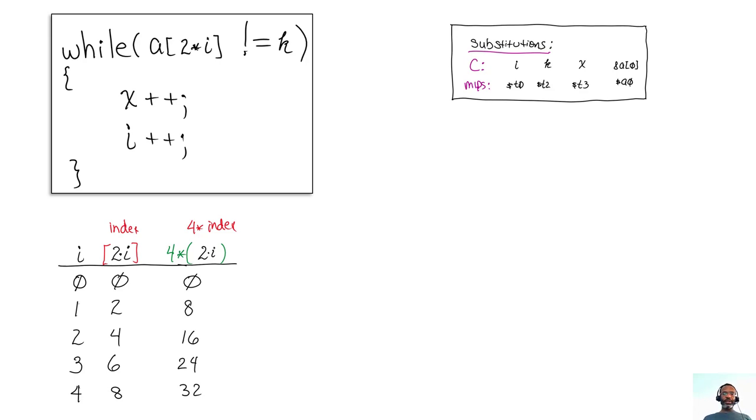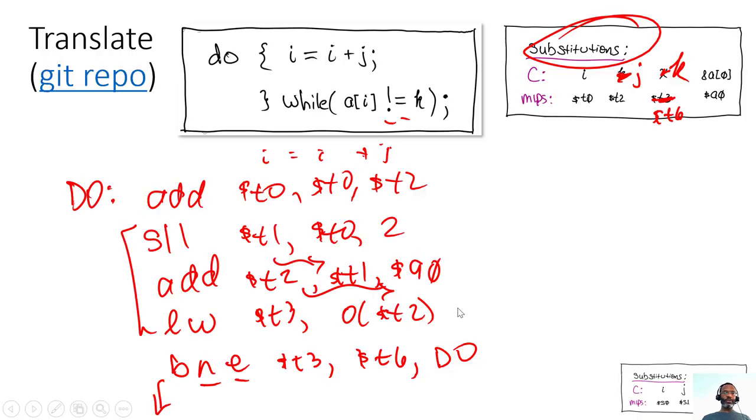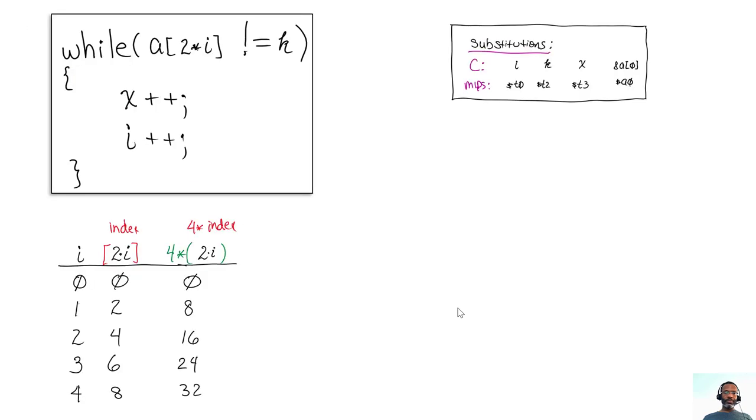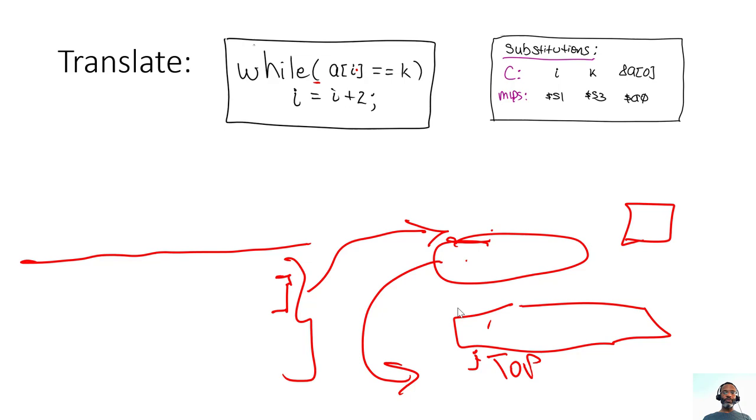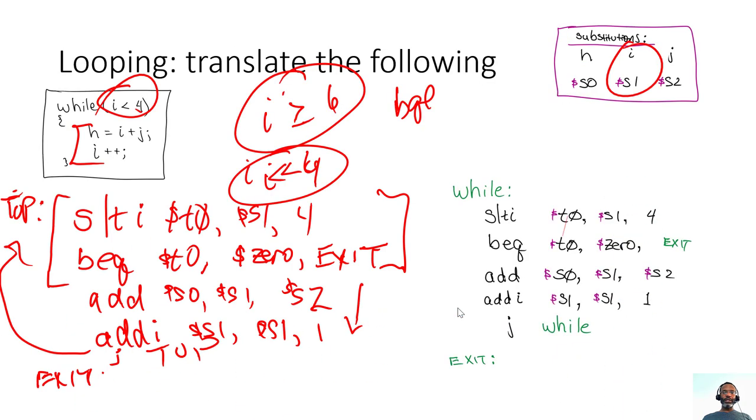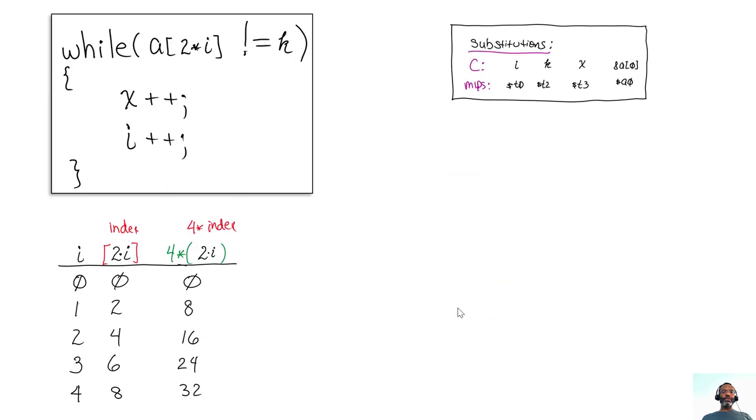For the previous examples, we had do-while loops, we had a while loop that was straightforward, but this one here is a little bit different in that we have a while loop and we're modifying the index.